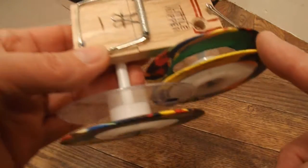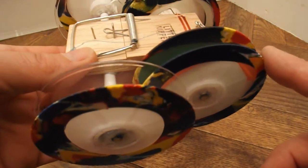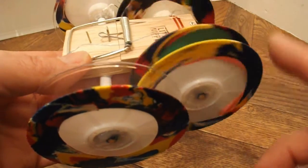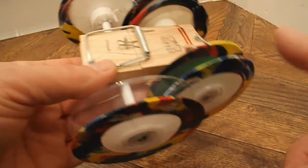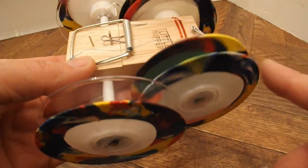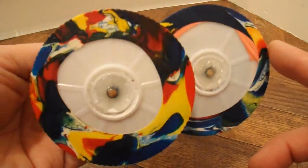The wheels are from a VHS tape cassette. In fact, they're from two tape cassettes, because you get two per cassette.